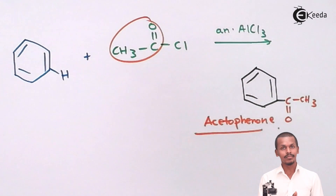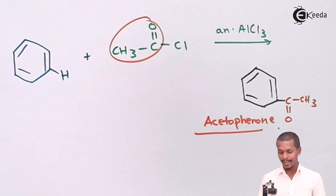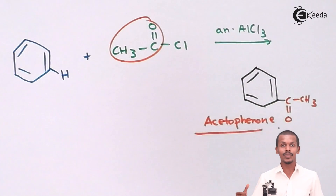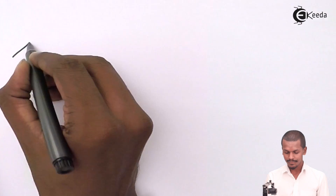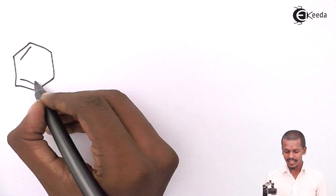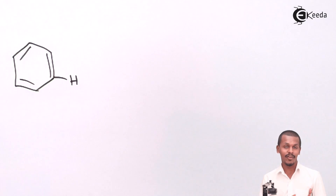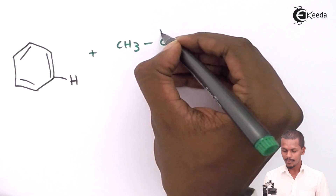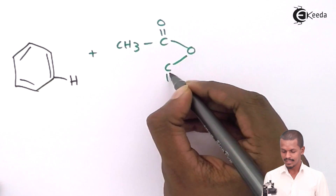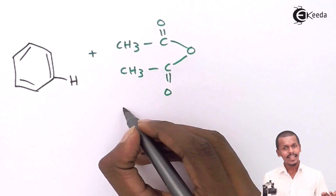This is what we get from the Friedel-Crafts Acylation reaction on benzene. It is not necessary to always use acyl chloride — we can also use acetic anhydride to get the same product. For example, reacting benzene with acetic anhydride (CH3-C(=O)-O-C(=O)-CH3) in presence of anhydrous AlCl3.